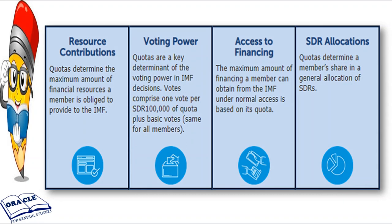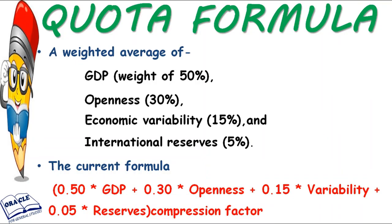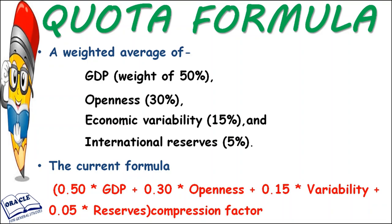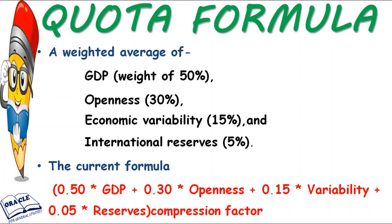Let's talk about the quota contribution to the IMF. It depends on four factors: the country's GDP, the country's openness (how open the economy is and how much import-export the country does), the third is economic variability (how variable the country's economy is), and the fourth is international reserves — like our RBI keeps international reserves. The percentages are: GDP contribution 50%, openness 30%, economic variability 15%, and international reserves 5%.